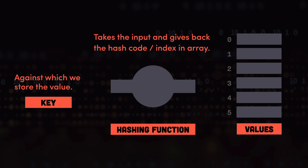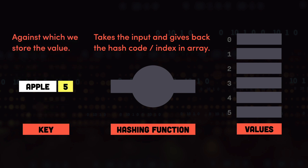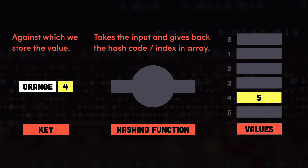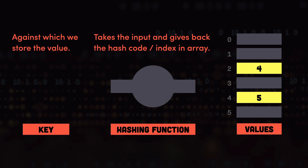Let's take an example. Say we have a key called apple and we need to store the value 5 for it. The key is passed to the hashing function, which gives back an index — let's say index 4 — and we store the price of apple at index 4. Next, for orange with the price 4, we pass orange to the hashing function and it gives back index 2, so we store the price for oranges at index 2. Later, when we need to read the price for apple, we pass the apple key to the hashing function, it gives back the index, and we read the value from that index.